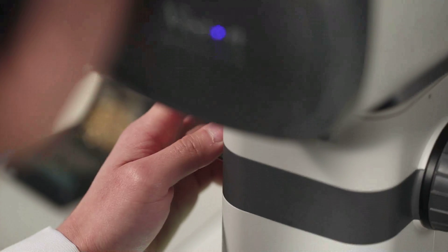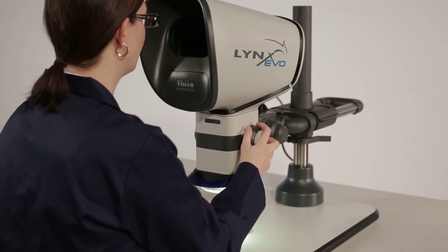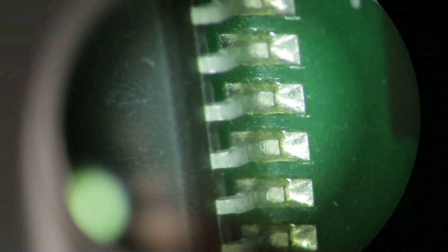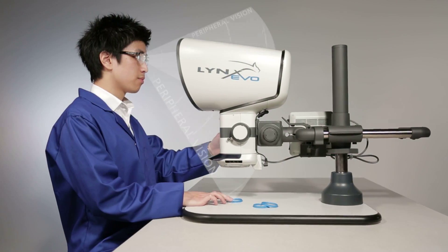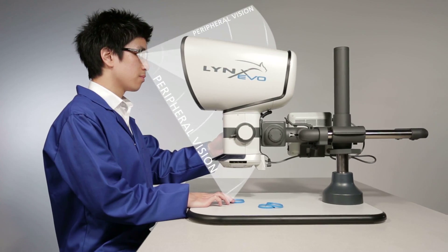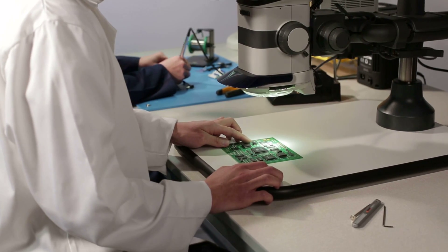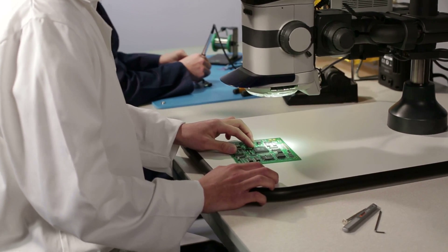The Lynx Evo advantage begins with stunning 3D stereo imaging, viewed through an ergonomic viewing lens. By sitting back from the viewing lens, users have significantly better peripheral vision, allowing a natural view of the subject with easy hand-eye coordination.